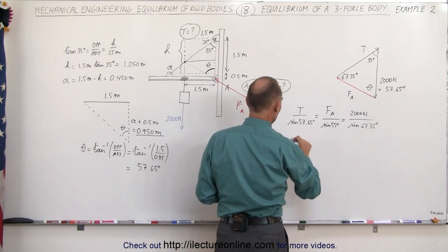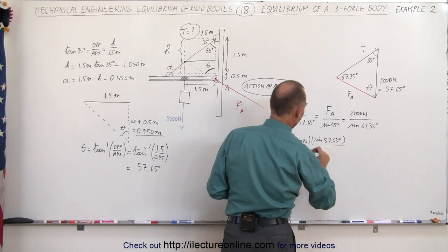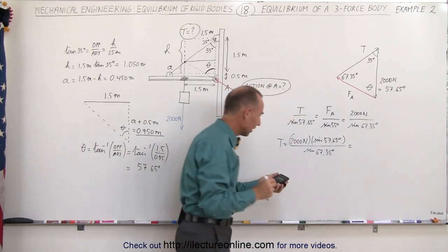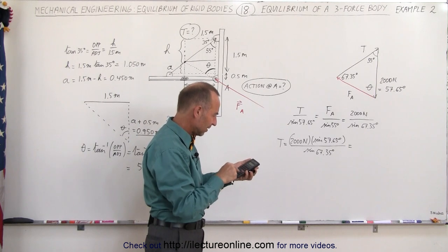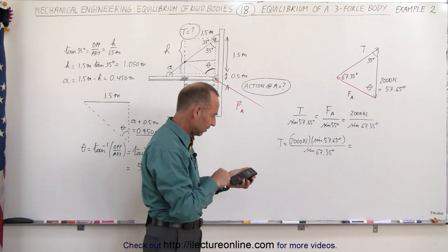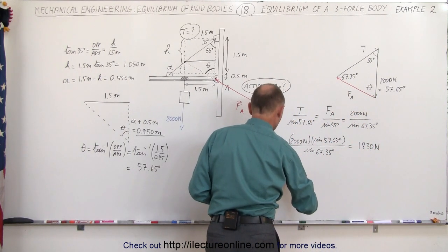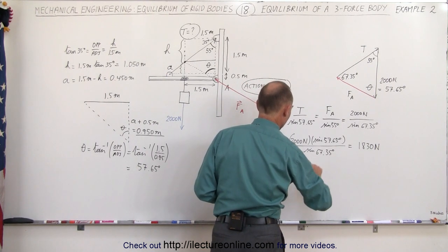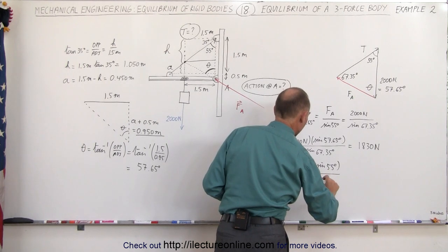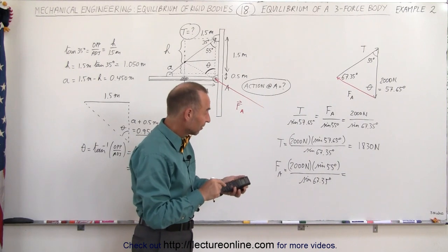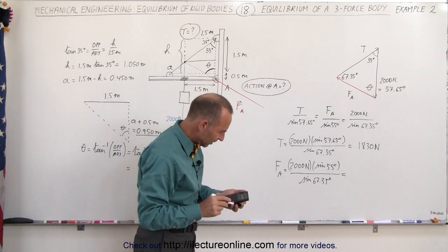The tension equals 2,000 newtons times the sine of 57.65 degrees divided by the sine of 67.35 degrees. Computing: sin(57.65°) divided by sin(67.35°), multiplied by 2,000, gives 1,830 newtons. Secondly, the force at A equals 2,000 newtons times the sine of 55 degrees divided by the sine of 67.35 degrees. Computing: sin(55°) divided by sin(67.35°), multiplied by 2,000, gives 1,775 newtons.